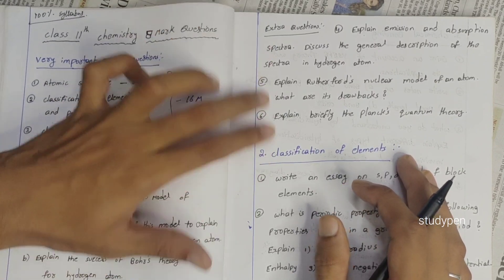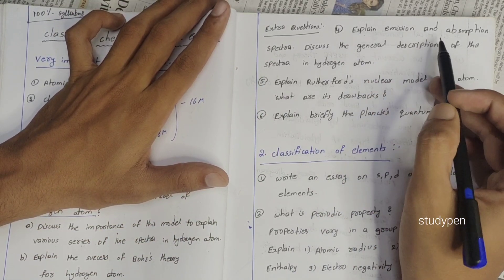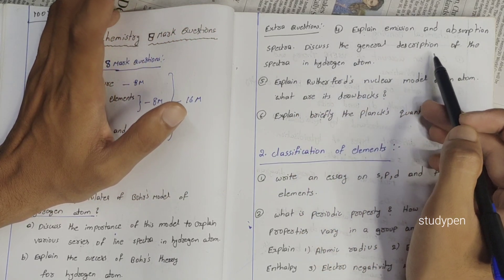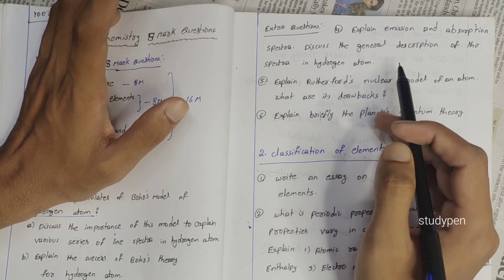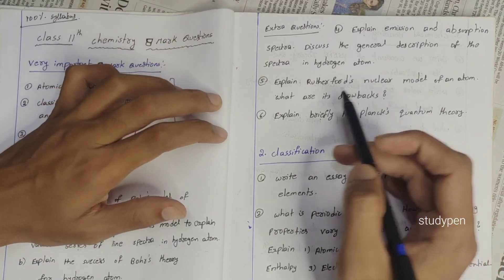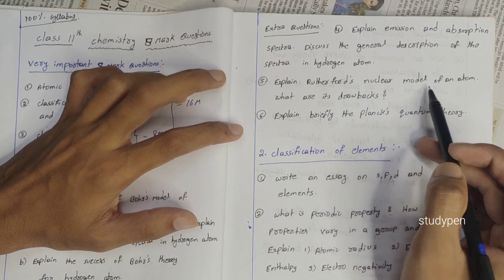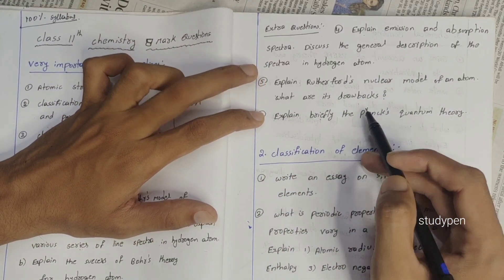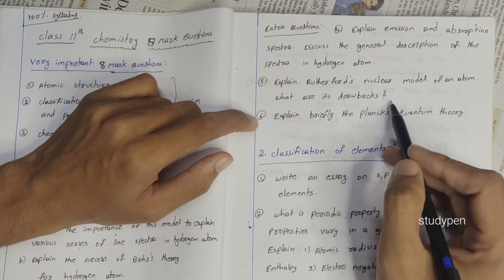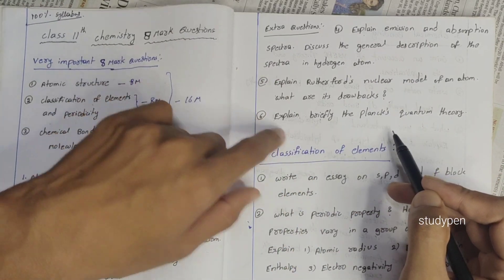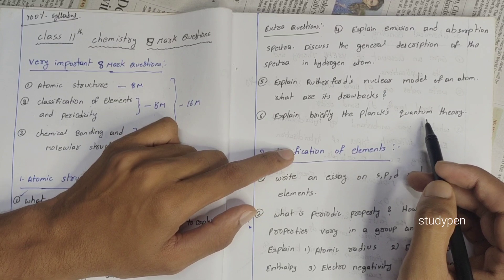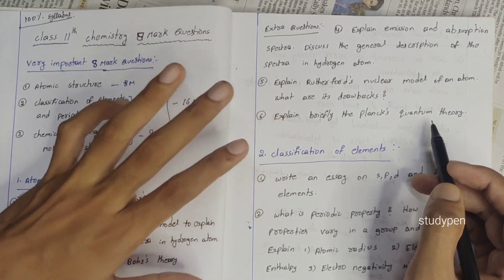These three questions are complete, well prepared. Extra questions: explain the emission and absorption spectra, discuss the general description of the spectra in hydrogen atom. Next, explain Rutherford's nuclear model of an atom, what are its drawbacks? And next, explain briefly the Planck's quantum theory. These three questions, very important.